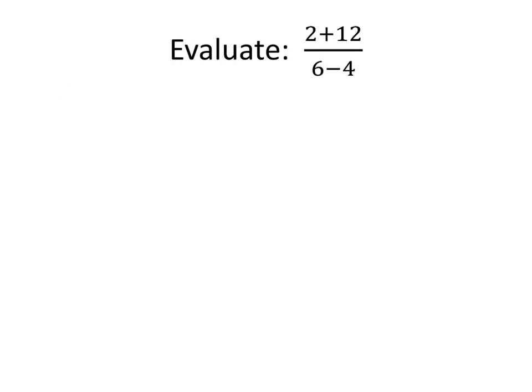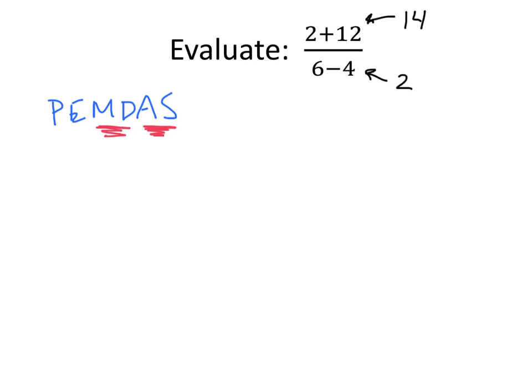In this expression, we have a fraction. Looking at our order of operations — parentheses, exponents, multiplication, division, addition, subtraction — we might be confused because multiplication and division come before addition and subtraction. But look at the way this fraction is written: the top is 2 plus 12, which is 14, and the bottom is 6 minus 4, which is 2. We can't do the division until we know what the top and bottom are, so the fraction becomes 14 divided by 2, which is 7.